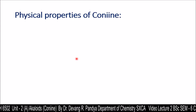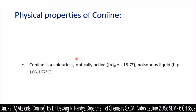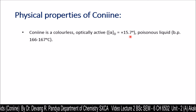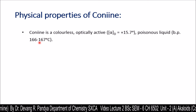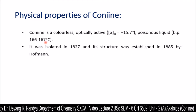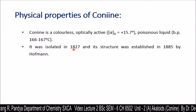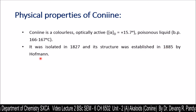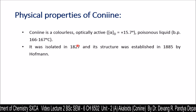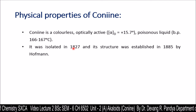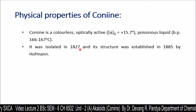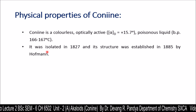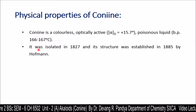Some physical properties of conine give insight into its structural information. Conine is a colorless, optically active, poisonous liquid. It was isolated in 1827 and its structure was established in 1855 by Hofmann. Isolation was done in 1827, and since that time no one tried to find structural information, but in 1885 Hofmann gave the structural establishment of this compound.